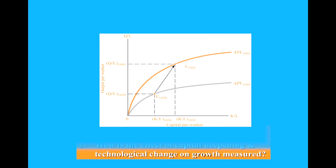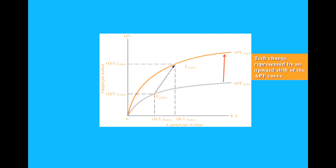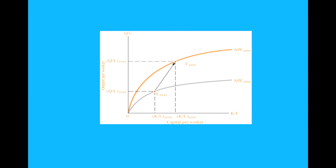In this case, technological change is represented in the figure by an upward shift of the APF curve from the gray line to the red line, that is, from APF 1950 to APF 1995. This upward shift shows the advances in productivity that are generated by the vast array of new processes and products like electronics, computers, advances in metallurgy, improved service technologies, and so forth. As for how we measure the total effect of capital deepening and technological change on growth, one way to do it is simply by using the arrow in the figure.